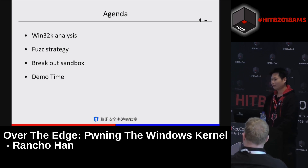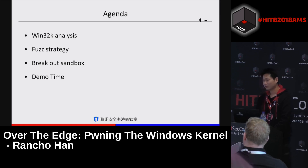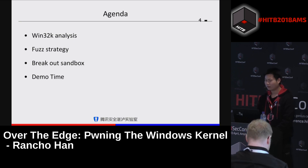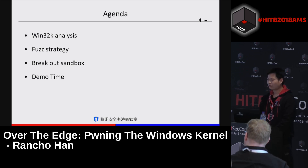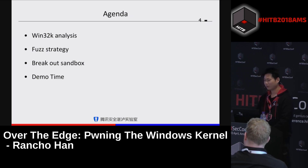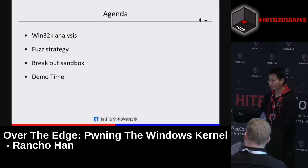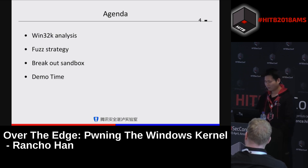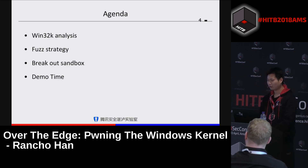The presentation is divided into two parts. First, I will talk about the Win32k subsystem — how to analyze it and how to fuzz it. I will introduce several of my unique discoveries. The second part, I will discuss four vulnerabilities and three exploits I have used. At the end, I will show you a demo from Edge to getting SYSTEM.